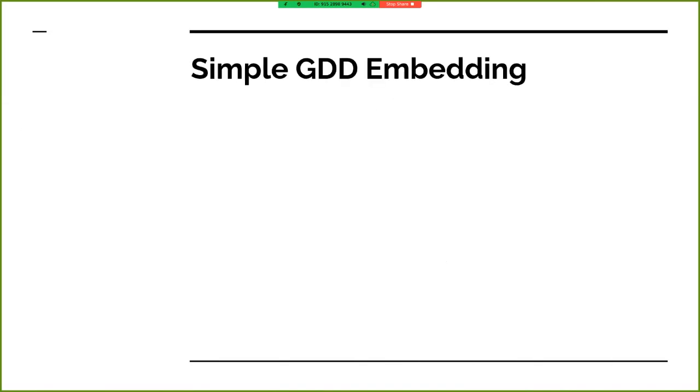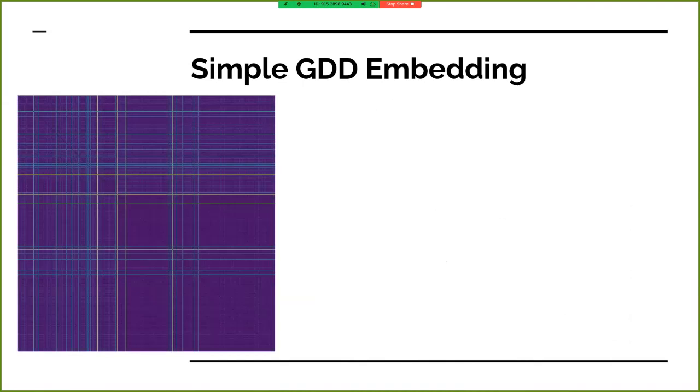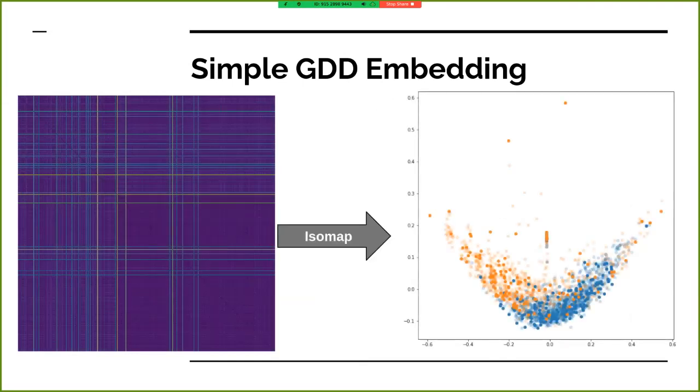When I compute GDD on this dataset of graphs, I get an embedding that does not respect the two categories. So clearly GDD is not differentiating the two classes of morphological graphs.